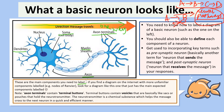Now, because we're in Year 10 and this is pre-VCE, we do expect you to use proper terminology. Rather than saying 'sending neuron,' we would prefer you use the term pre-synaptic neuron, and the receiving neuron should be called the post-synaptic neuron. These are just the proper terms for sending and receiving neurons. You should also be able to define each of the components I've underlined here in green, and I'll show you the definitions for them in the next slide.